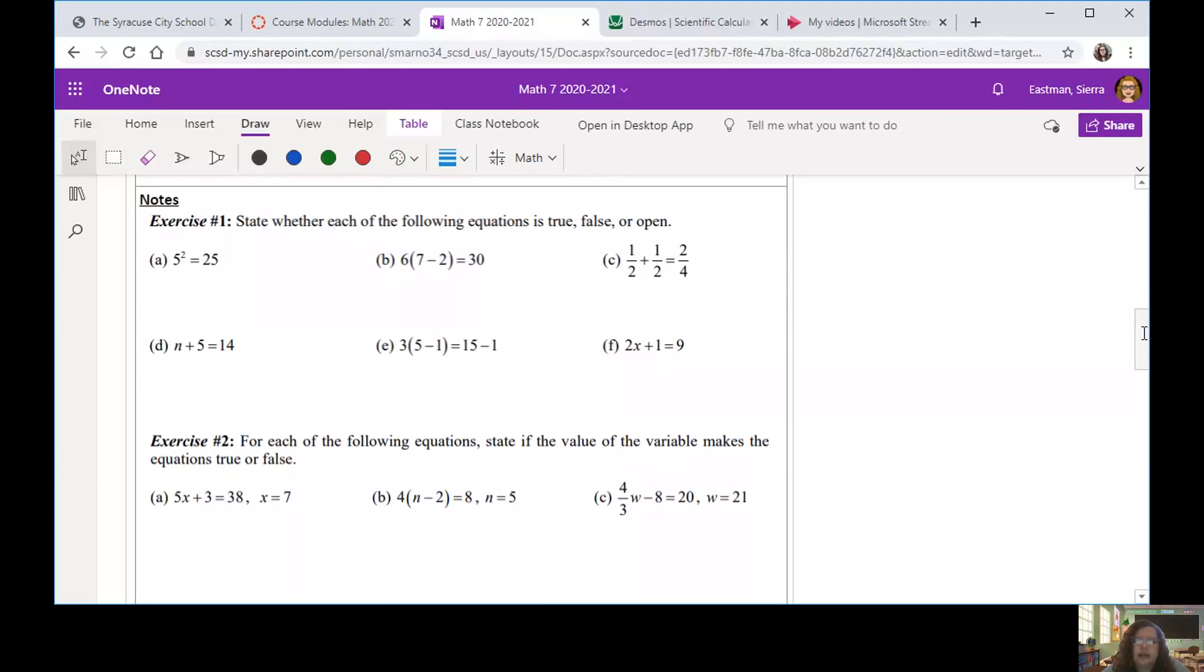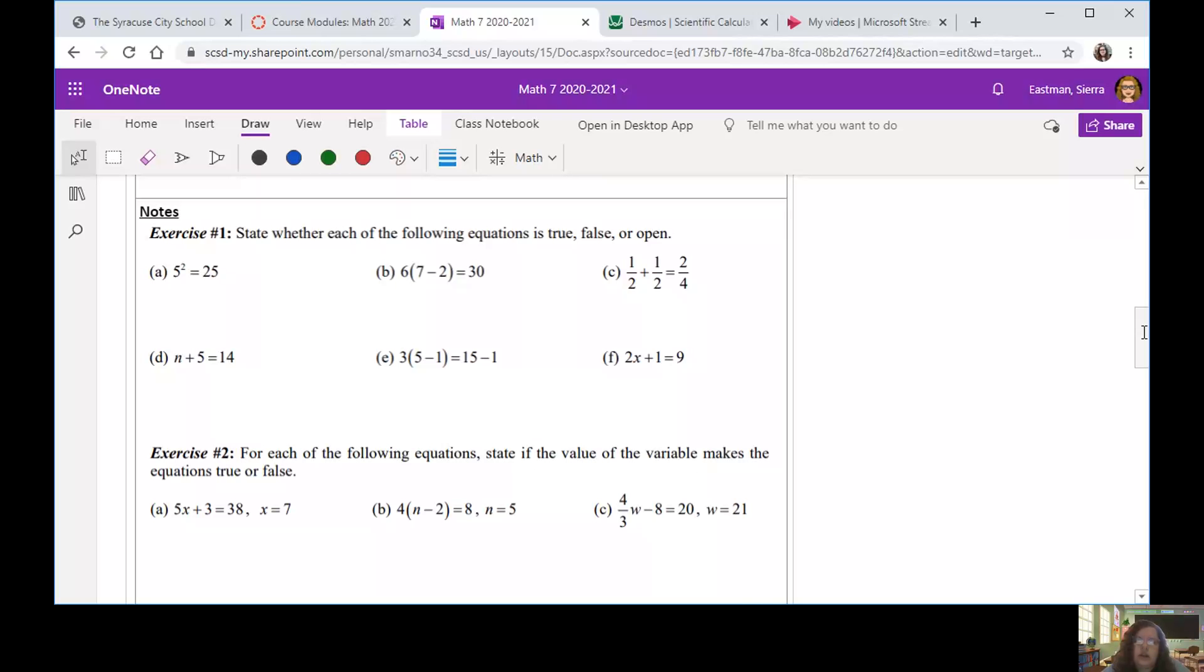If we scroll down to our notes section, exercise one wants us to state whether each equation is true, false, or open. So I'm just going to use the letters T, F, and O, and I'm going to start calculating some of these. Five squared is the same as five times five. We know that five times five equals 25 every single time that you do it in a calculator. So we can say true. Part B, we have seven minus two, which gives me a five in these parentheses here. And if I multiply that five out by this six, that equals 30 every single time. There's no way that that value can change. So we can say that it's true.